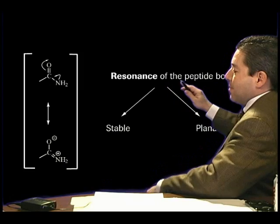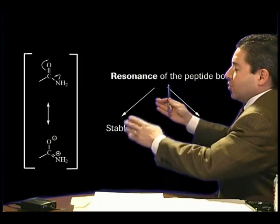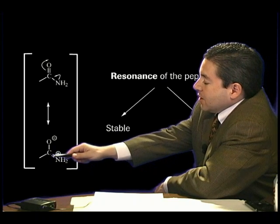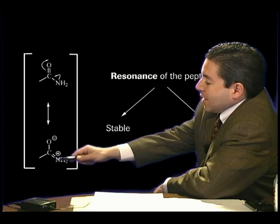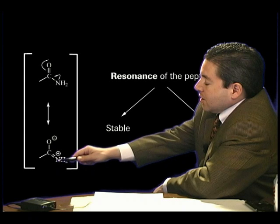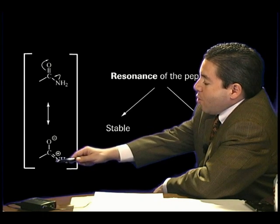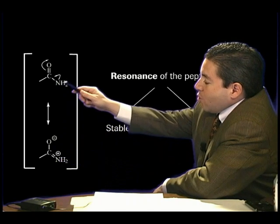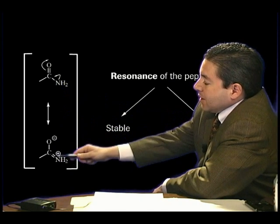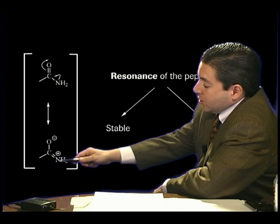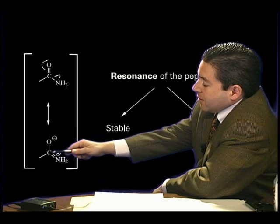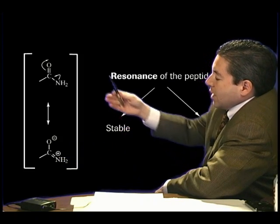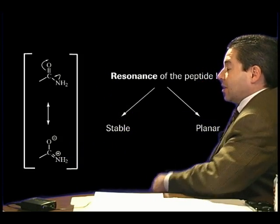This resonance of the amide or peptide bond results in two properties. The first is stability. The carbon-nitrogen linkage, which is the actual amide linkage, is more energetically stable than a pure single bond — not quite as much as a double bond, but more energetically stable than a single bond. It has what's called partial double bond character. Hence, the carbon-nitrogen linkage is very stable relative to a single bond.